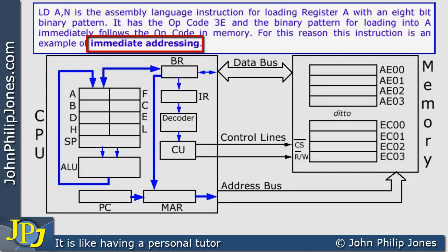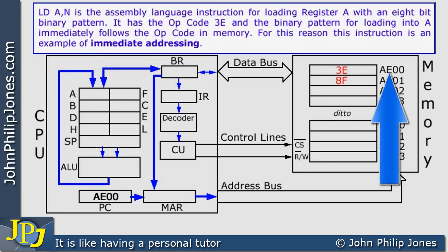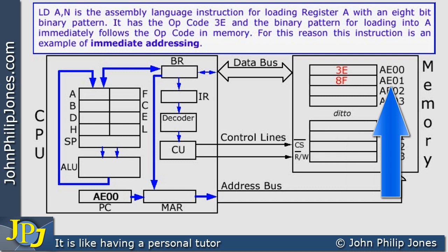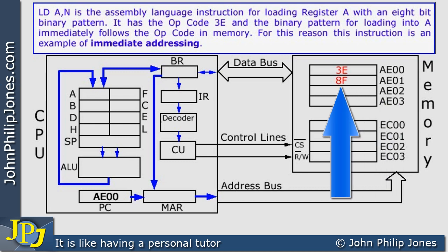It is immediate addressing because the data to be manipulated by this instruction comes immediately after the instruction's operation code — we abbreviate operation code to simply opcode. If we consider the computer's memory, we can see that placed at address AE00, we have the binary pattern 3E. In the next memory location, AE01, we have the binary pattern 8F.